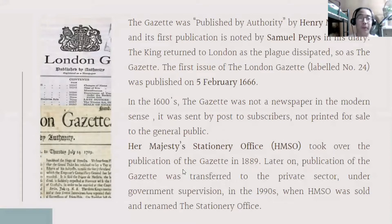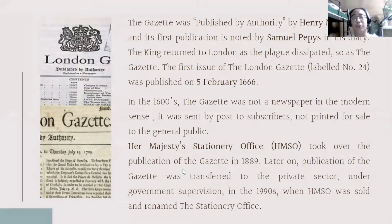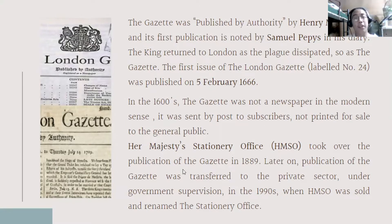The Gazette was published by authority by Henry Muddiman, and its first publication was noted by Samuel Pepys in his diary. The King returned to London as the plague dissipated, and so did the Gazette. The first issue of the London Gazette, labeled number 24, was published on February 5, 1666. In the 1600s, the Gazette was not a newspaper in the modern sense — it was sent by post to subscribers and not printed for sale to the general public. Her Majesty's Stationery Office (HMSO) took over the publication of the Gazette in 1959. Later, publication was transferred to the private sector under government supervision in the 1990s when HMSO was sold and renamed the Stationery Office.